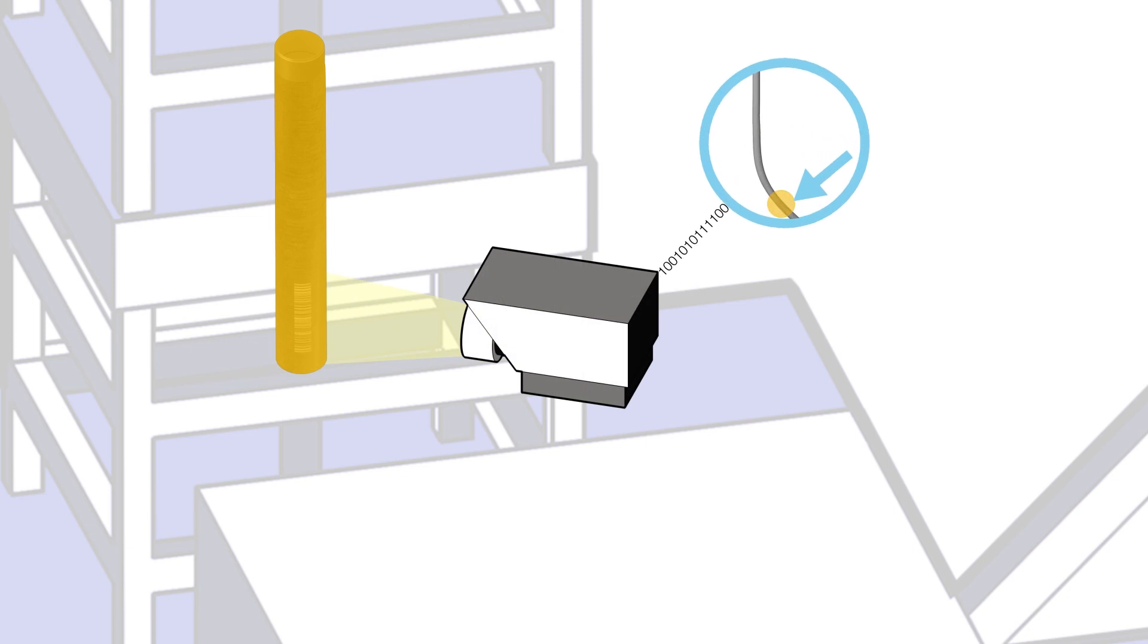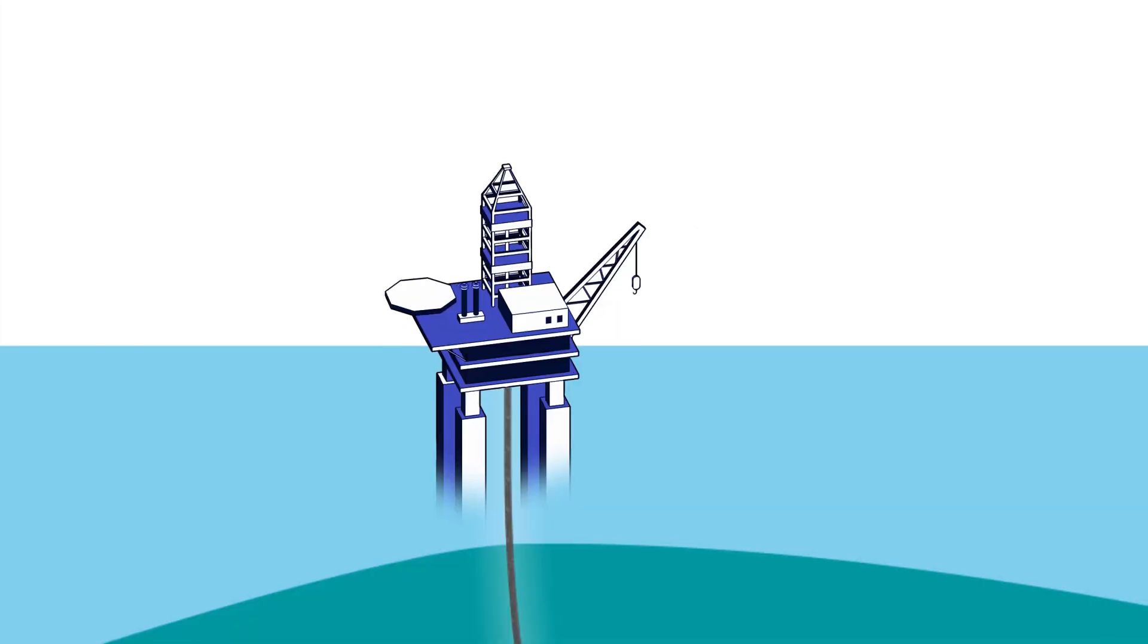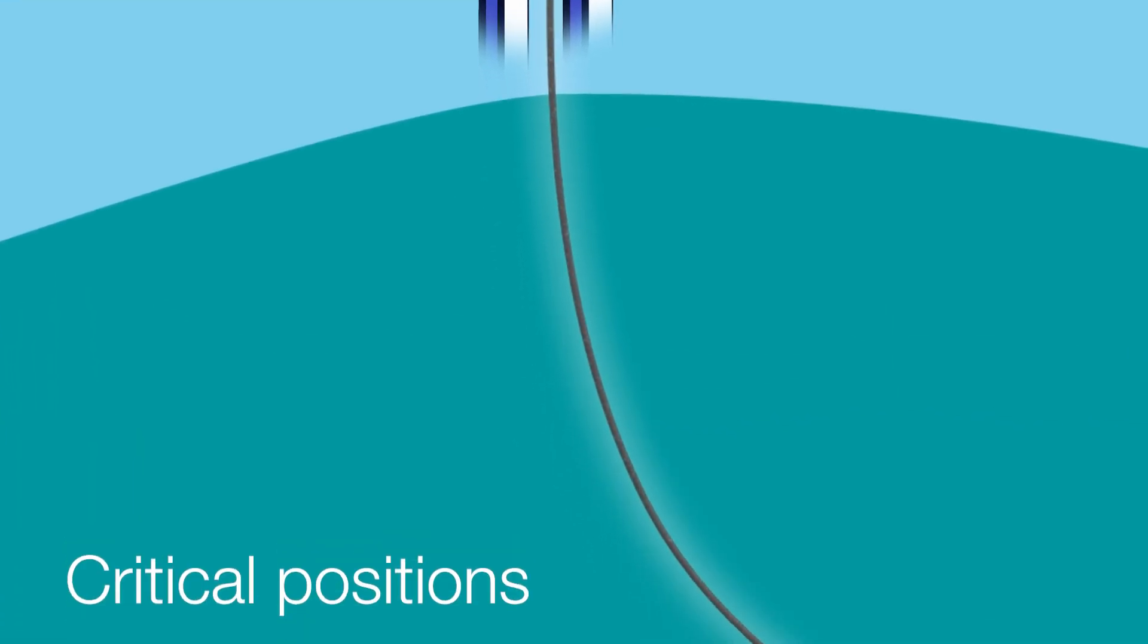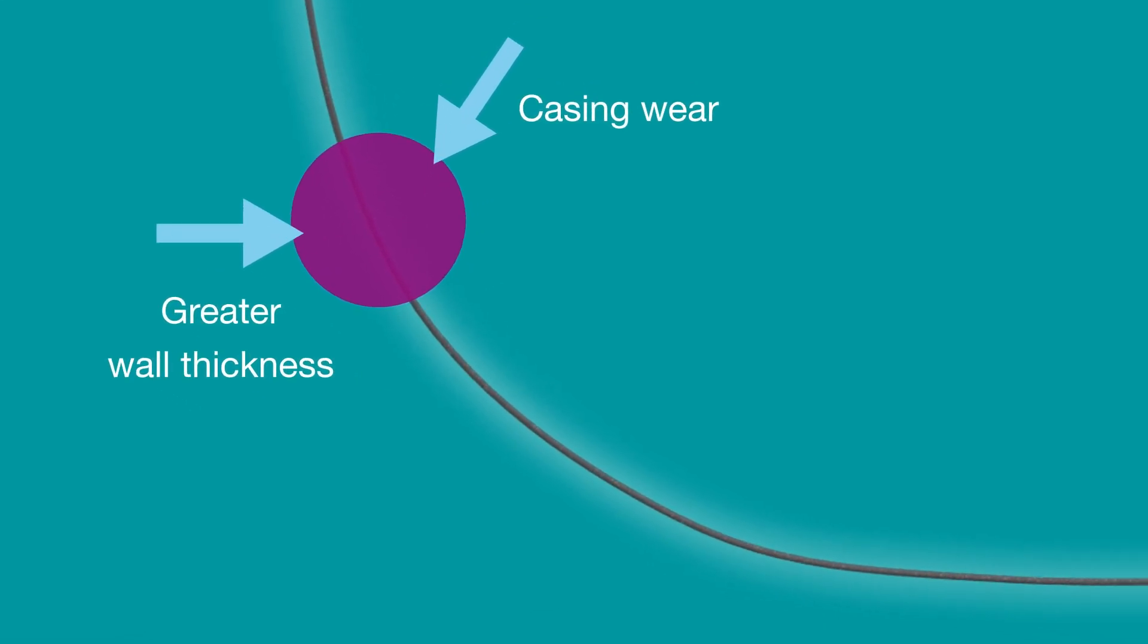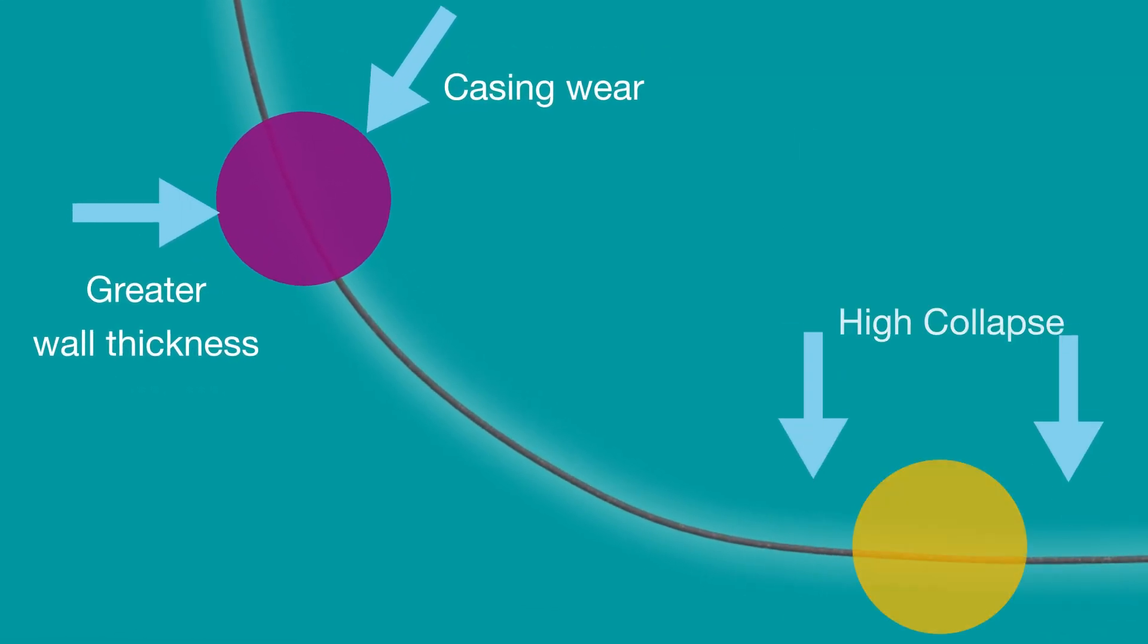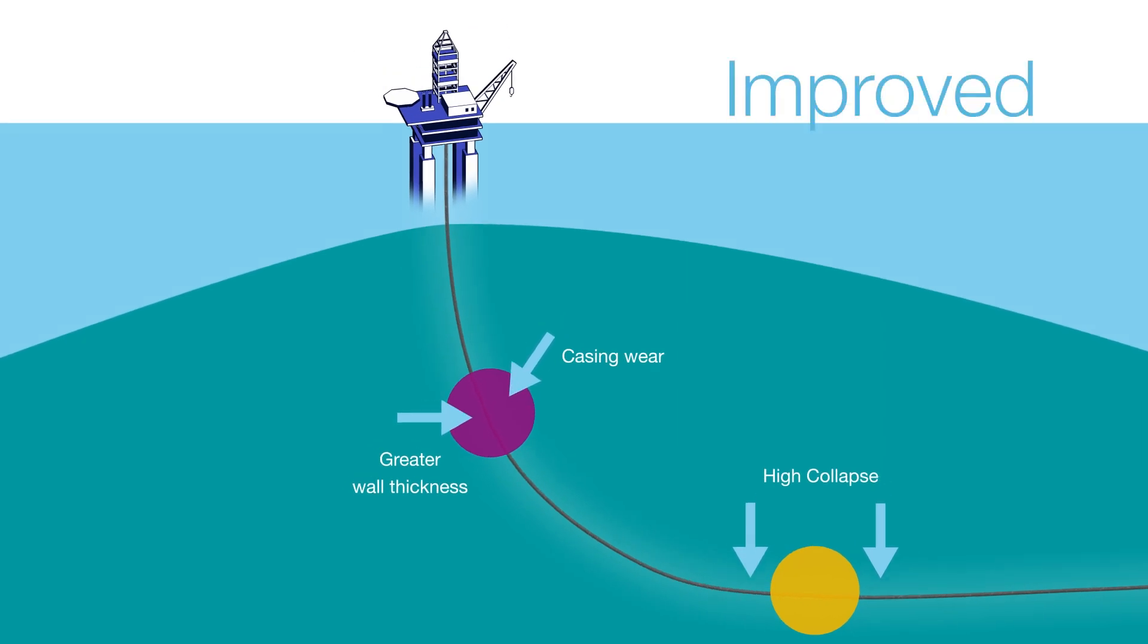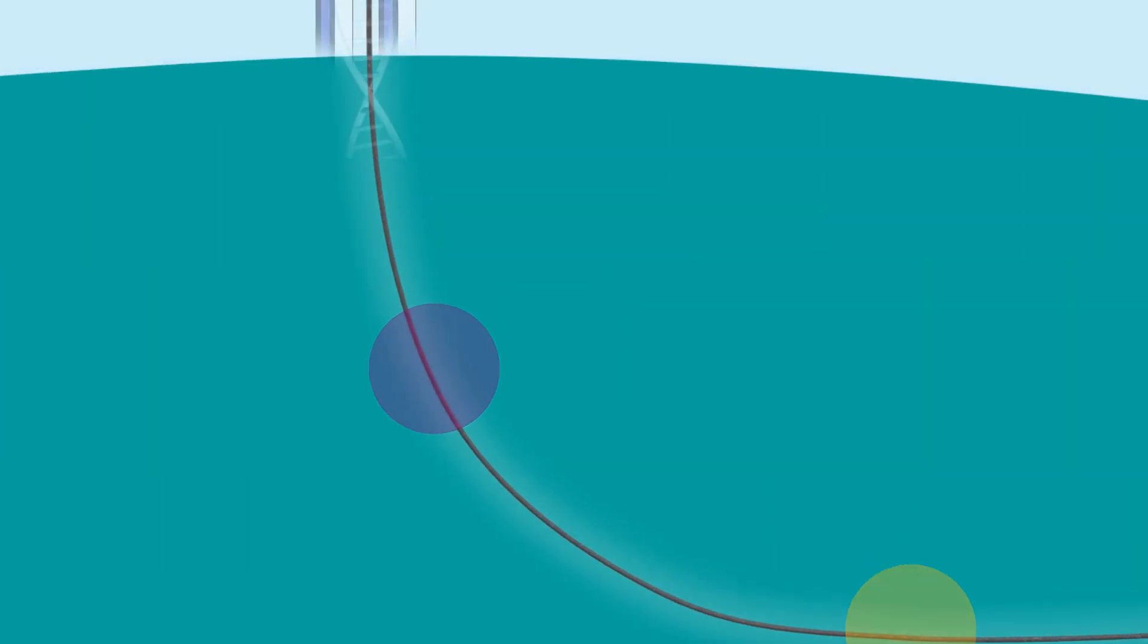put the right pipe at the right place in the well thanks to our digital running assistant. Now you can position thicker pipes at critical positions to limit the impact of casing wear, for example, and you can have pipes with the highest burst or collapse values where you need them. This means improved well integrity and optimized costs. After